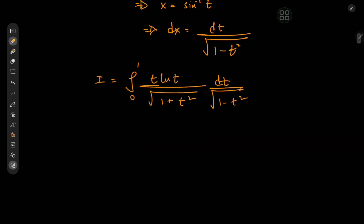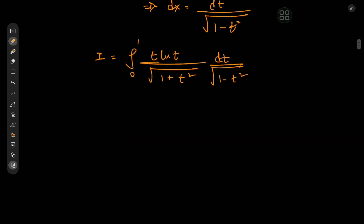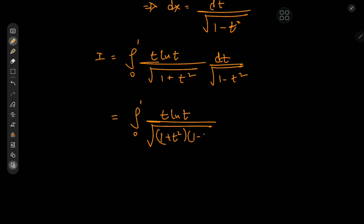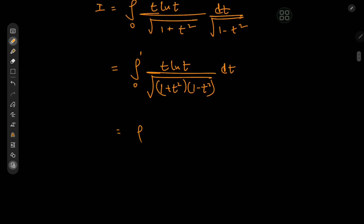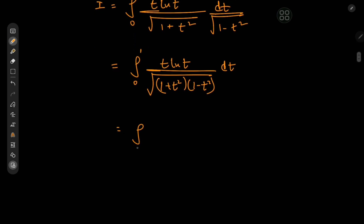We could try combining the terms in the square roots. So we have the integral from 0 to 1 of t·log(t) divided by root((1 + t²)(1 − t²)) dt, which works out quite nicely to the integral from 0 to 1 of t·log(t) divided by root(1 − t⁴) dt.